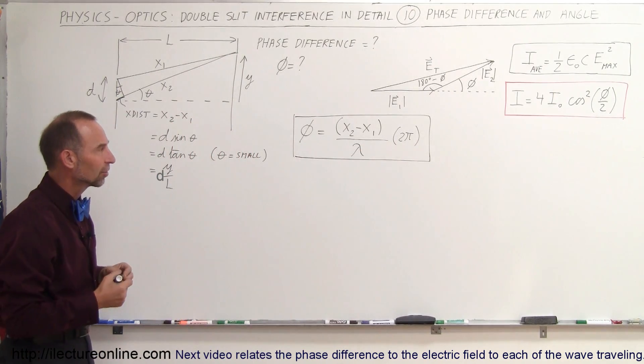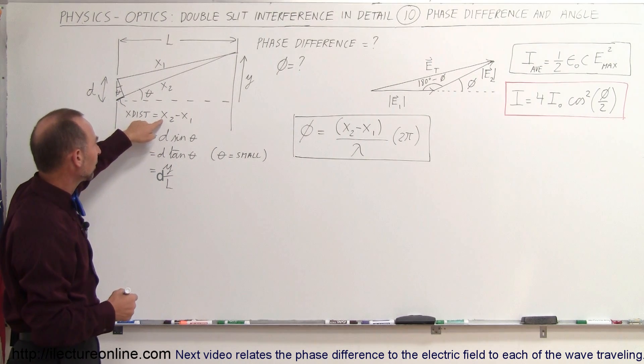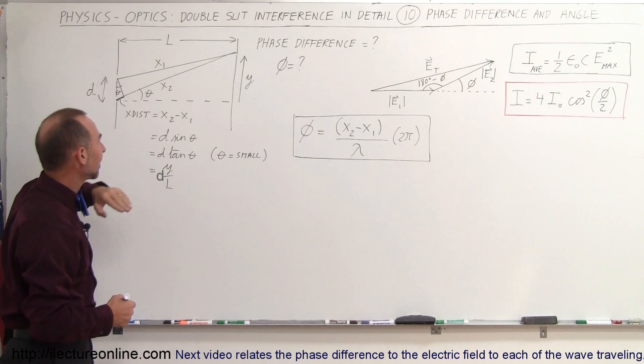So what we're going to do now is replace the extra distance traveled, x2 minus x1, by d sine theta.